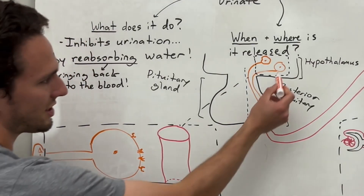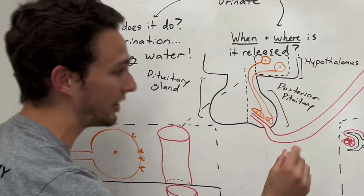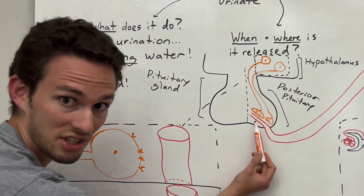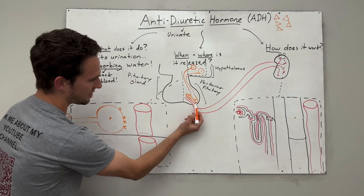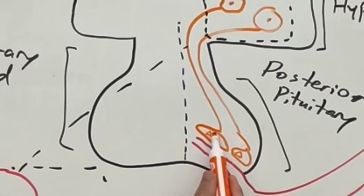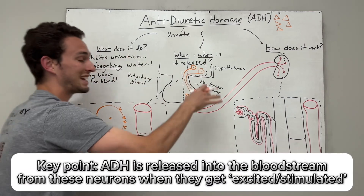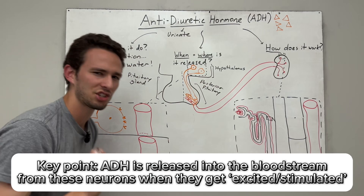As you can see, the neuron cell body — so these circles here — are going to extend their axons, or their signaling branch, all the way down into the posterior pituitary, and actually synapse, in a way, connecting with the bloodstream of the posterior pituitary. The antidiuretic hormone, designated as an orange triangle, is sitting at the ends of these neurons' axons, and it's going to be sent into the bloodstream directly. That will happen whenever these neurons get excited or stimulated to send that signal and release ADH into the bloodstream.